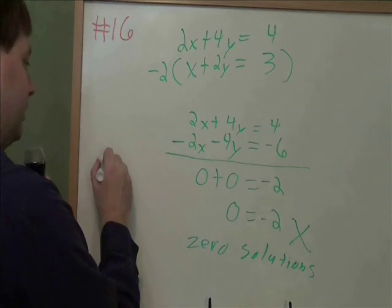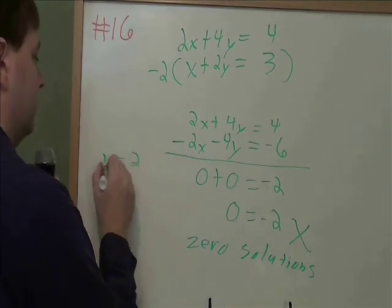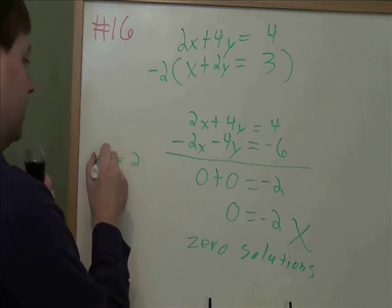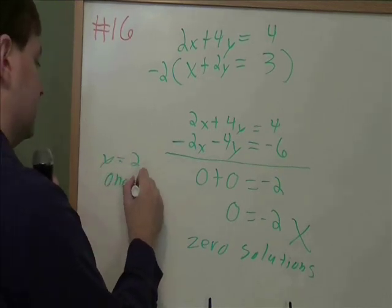If we had gotten something like y equals 2, there would have been one solution. That would be true when y is 2, and that's the only y it works for. That would have had one solution.